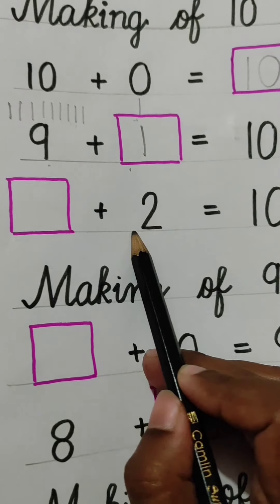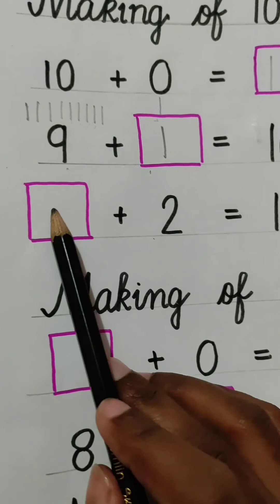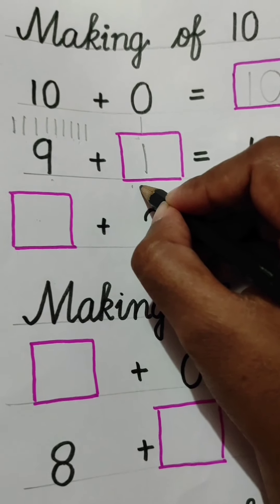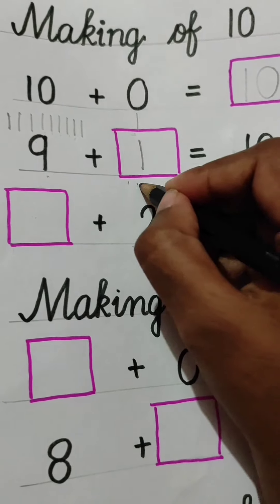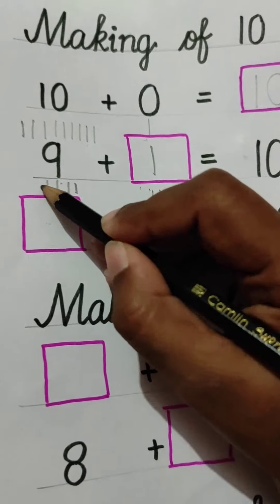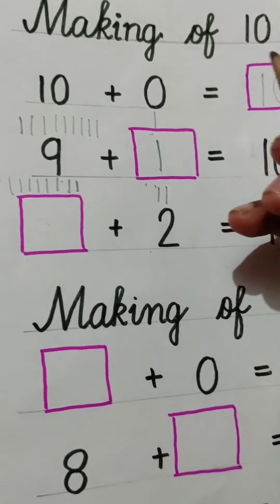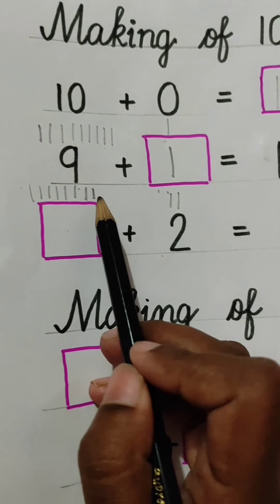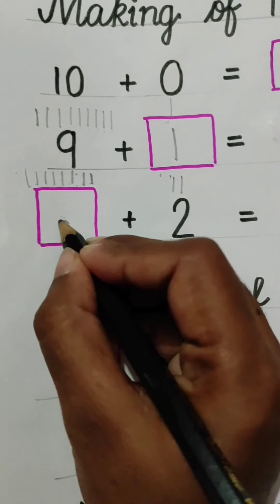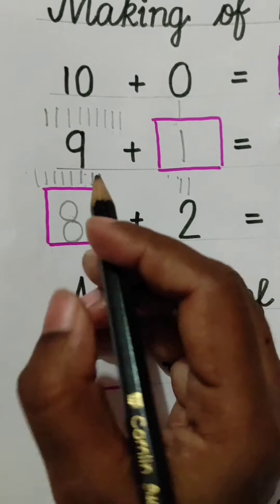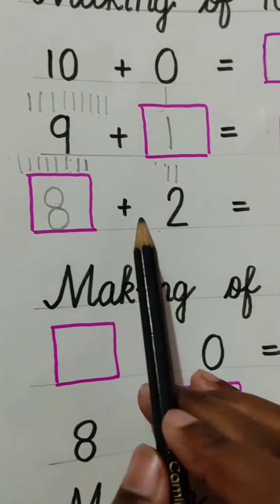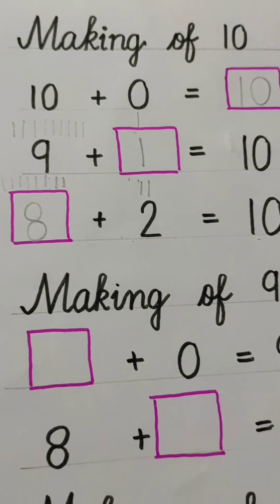Next question: 2 plus blank is equal to 10. 2 में हम लोग क्या add करेंगे कि हमारा 10 आए? उसके लिए पहले हम लोग 2 lines खींचेंगे, उसके बाद बाकी lines इसके ऊपर खींचेंगे — 1 through 10. So यहां पर कितनी lines हैं, वो हम लोग count करेंगे: 1, 2, 3, 4, 5, 6, 7, 8. So we will write here 8. 8 plus 2 is equal to 10.